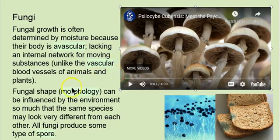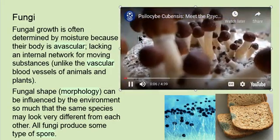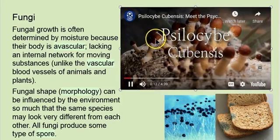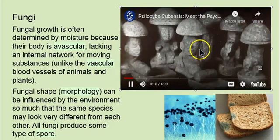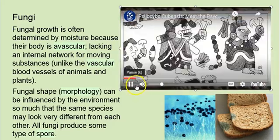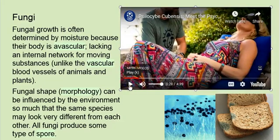Another strange thing about fungi is their morphology — that means shape — it can be so variable that the same species may look different depending on where it grows. Let's look at Psilocybe cubensis: this is the same species, just growing in different places. How do you know what it is? Hopefully you get it fresh and you can see it bruises blue. There's a long history of fungi use, thousands of years, and still being used today for various purposes.